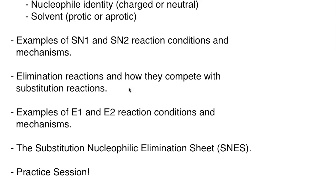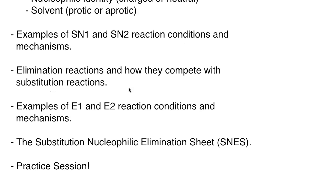We'll also look at elimination reactions, which are in direct competition with substitution reactions. You have to know when to predict whether an elimination reaction is going to occur or a substitution reaction. We will look at examples of E1 and E2 — similar to SN1 and SN2 — and we'll discuss what the 1 and 2 refers to, which will be coming up in the next lecture, and we'll look at those mechanisms.